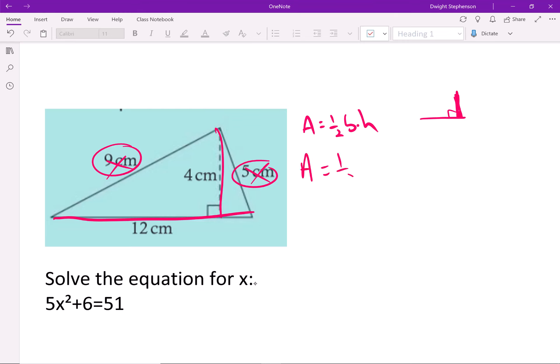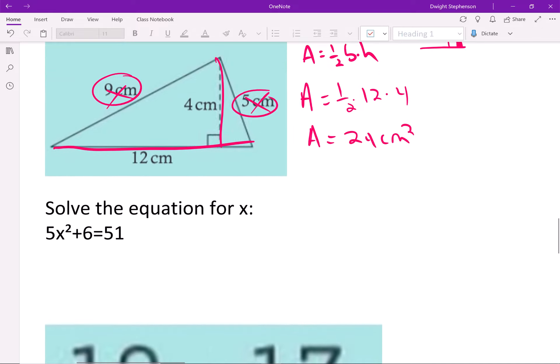So the area in this case is going to be 1 half times 12 times 4, which is the same as 6 times 4, which equals 24. And again, the area is always units squared, so centimeters squared.